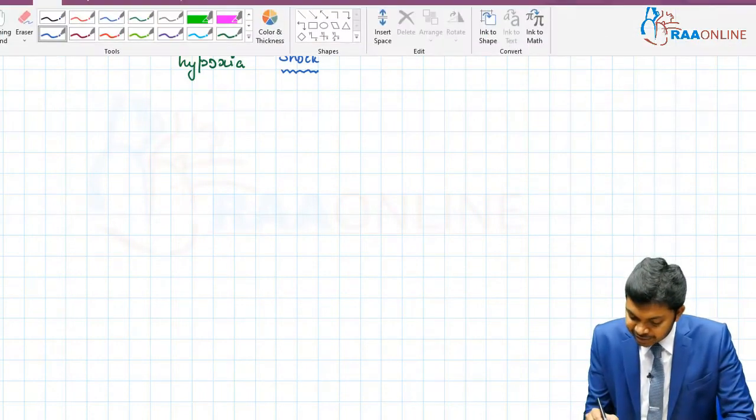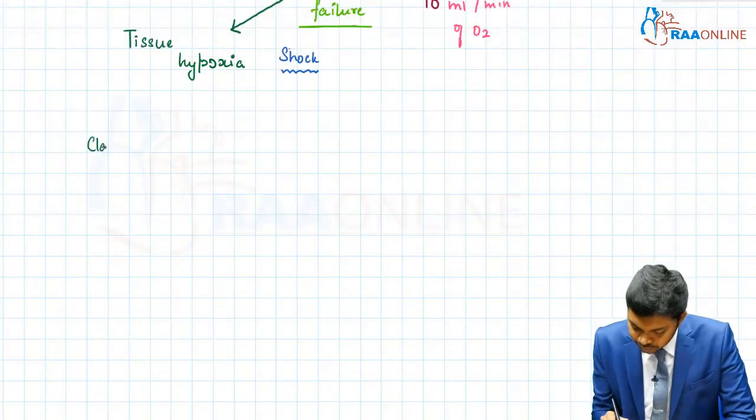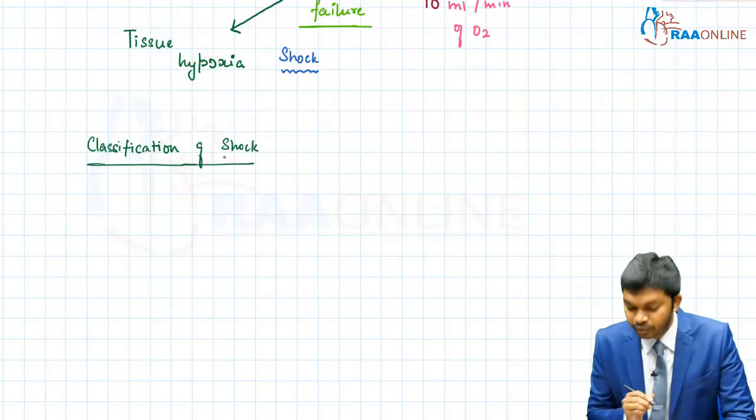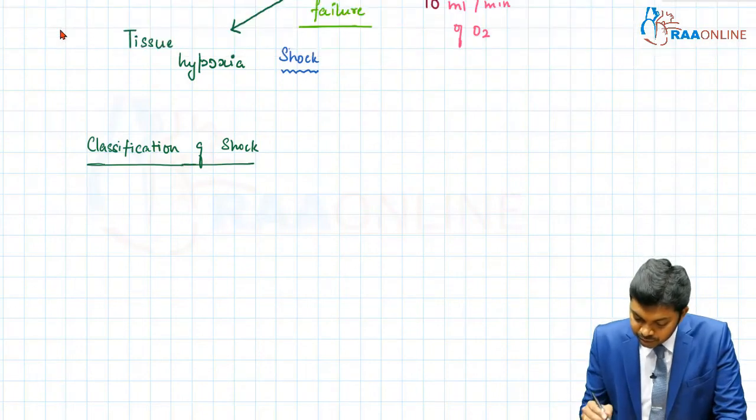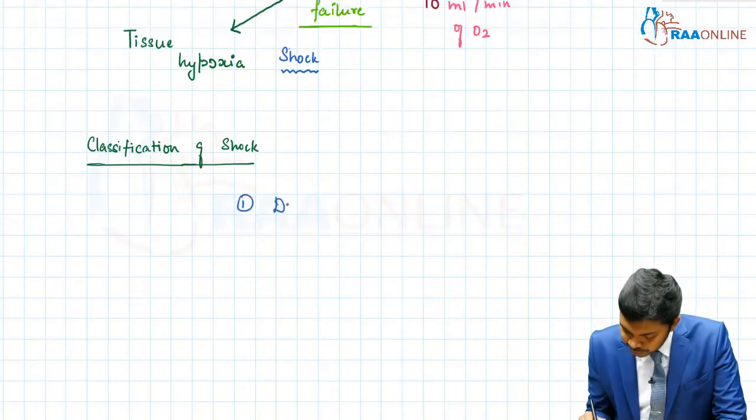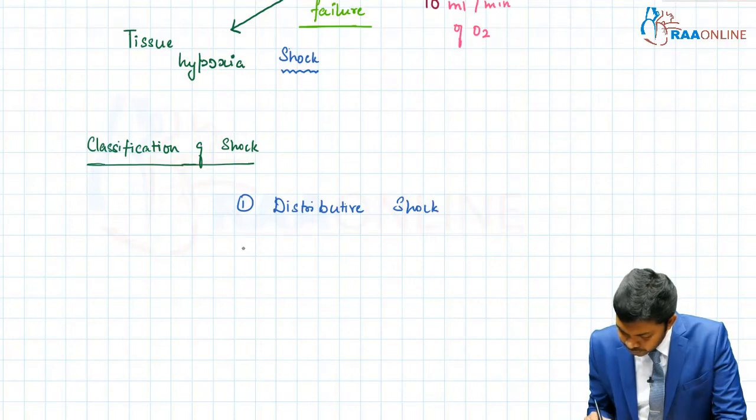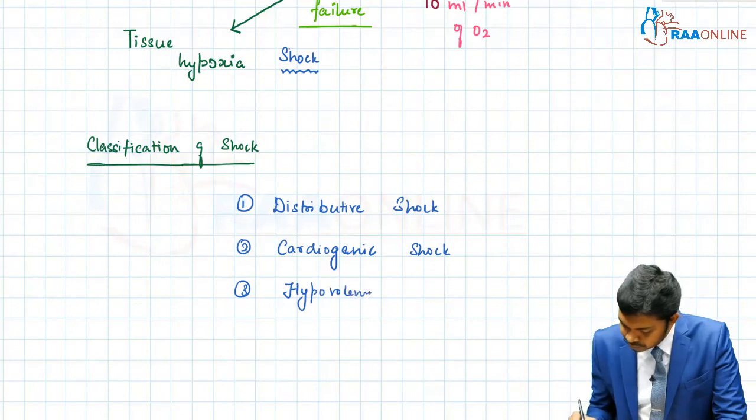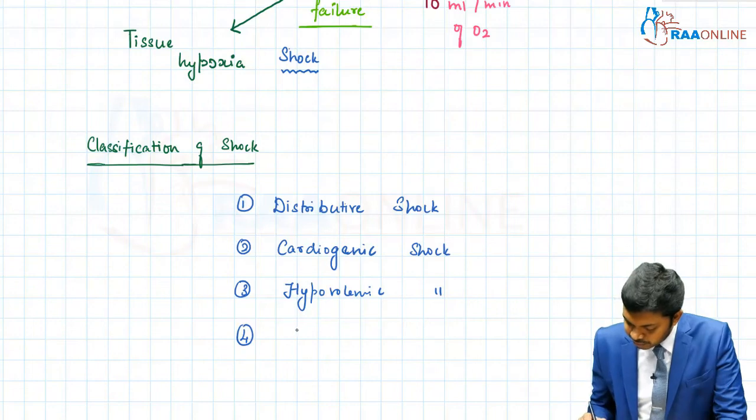Shock can be classified as: number one, distributive shock; number two, cardiogenic shock; number three, hypovolemic shock; number four, obstructive shock.